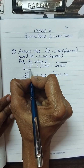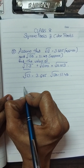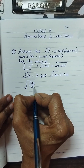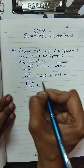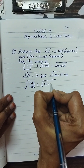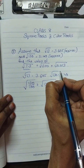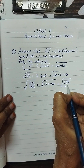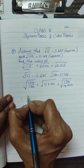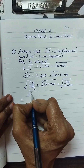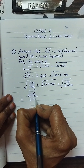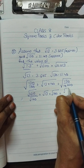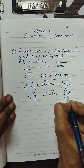Here, √1.3 can be written as √(130/100), √1300 can be written as √(13 × 100), and √0.013 can be written as √(130/10000). That equals √130/√100 + √13 × √100 + √130/√10000.